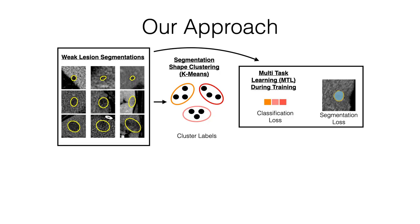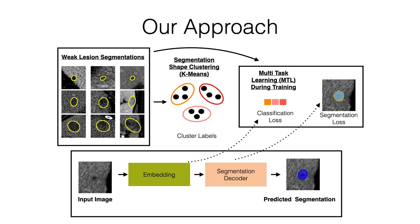In this work, we propose to replace the co-segmentation process by a joint classification and segmentation network. We obtain the class labels by clustering lesion bounding boxes with k-means. Based on the bounding boxes, we also generate pseudo-ground truth using the ellipse algorithm. We perform classification on the encoder output and train our model in a multi-task learning fashion to minimize the joint loss.